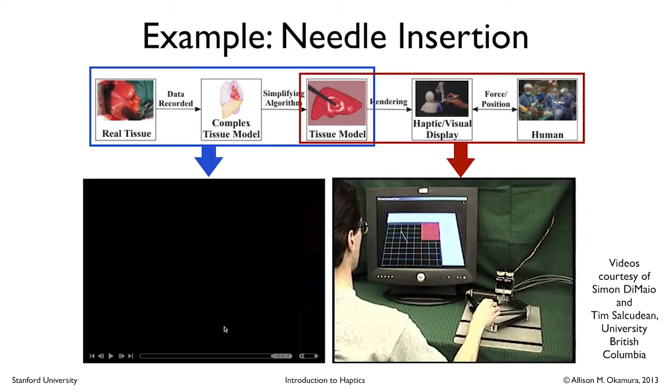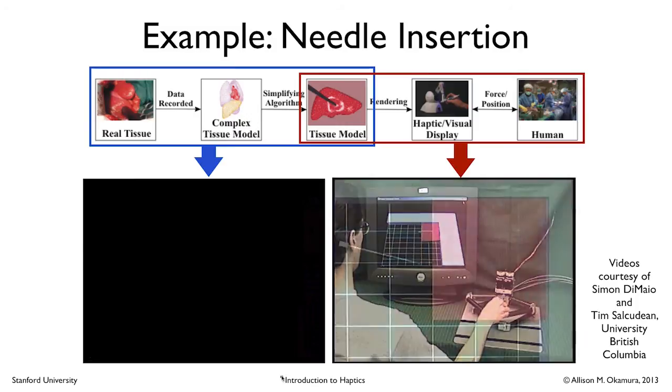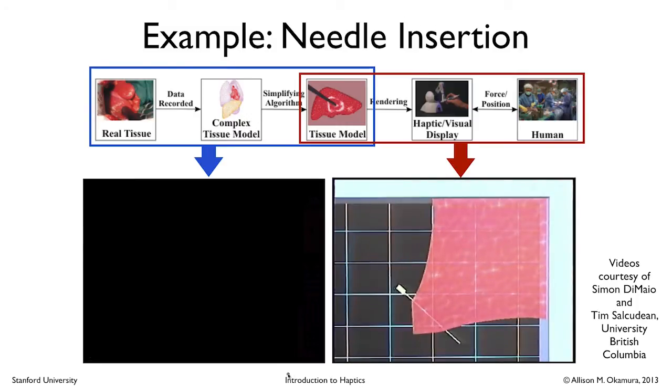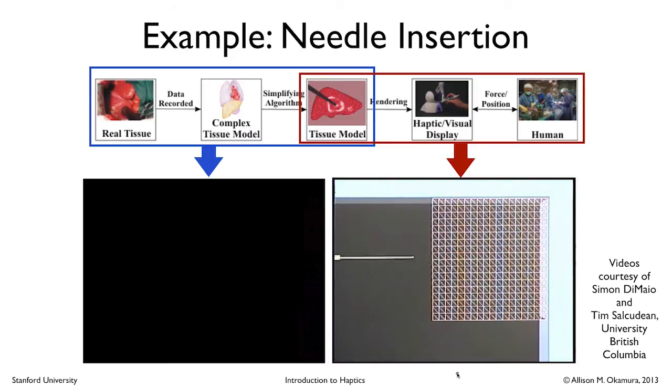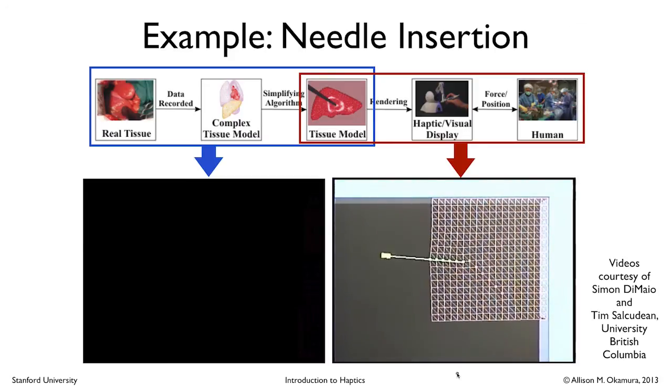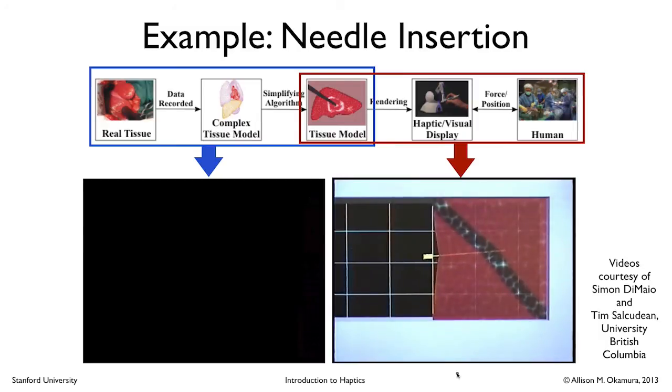Now we can see the haptic rendering that's actually been created from that virtual model. So that same robot that was being used in the left video to acquire the data is now being used as a haptic device to generate force displacement relationships that the user can feel. And again, they're taking all of the points and deformation information that they recorded with the real needle and generating a virtual environment that feels similarly realistic. Pretty cool, huh?